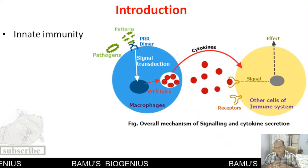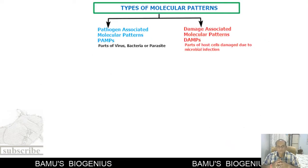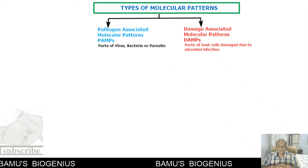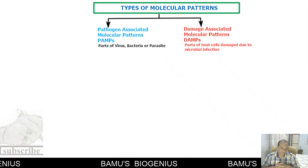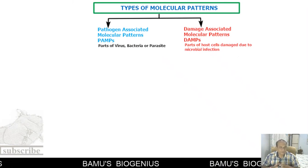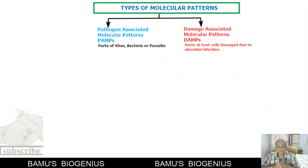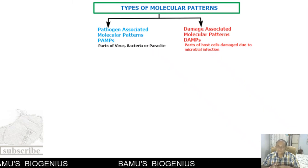These patterns can be of two types. One is called pathogen-associated molecular patterns, or PAMPs, and another is damage-associated molecular patterns, or DAMPs. PAMPs are parts of a virus, bacteria, or parasite, whereas DAMPs are parts of host cells that are damaged due to microbial infection.